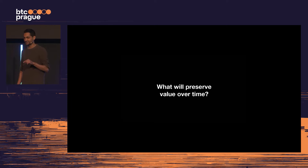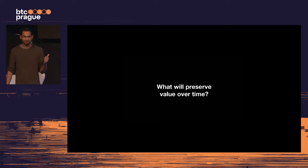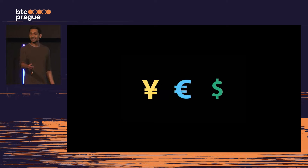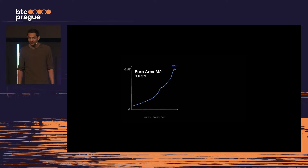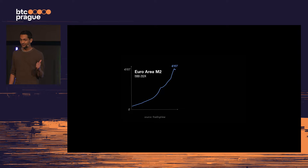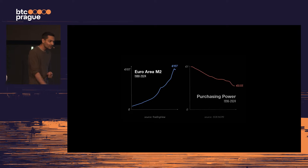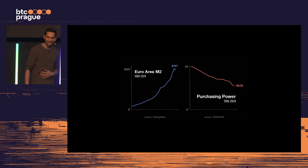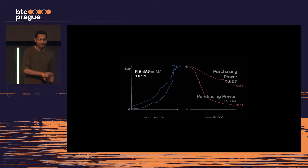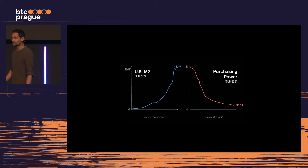Every net producer has one very important question they must ask themselves: what will preserve value over time? Governments would love it if you chose their fiat currency — why? The more demand there is for it, the more of it they can create without causing too much attention. That's not working out very well for them. So this becomes an obviously bad vehicle to save in long term, and it's the same story wherever you go.